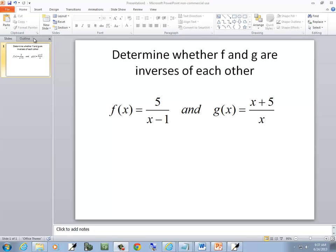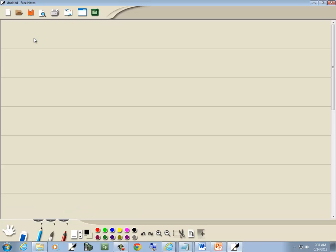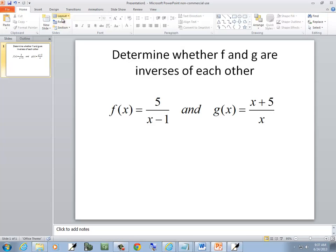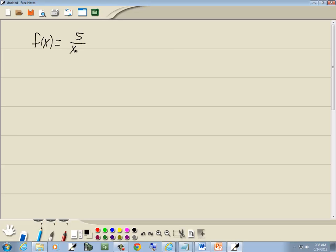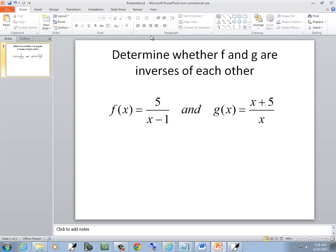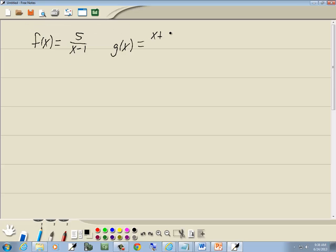This problem, we want to determine whether f and g are inverses of each other. So we've got f of x is equal to 5 over x minus 1, and g of x is equal to x plus 5 over x.